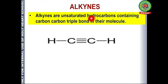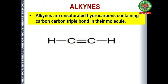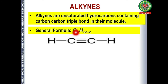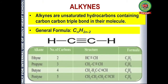First of all, we should know what alkynes are. Alkynes are unsaturated hydrocarbons containing a carbon-carbon triple bond in their molecules. We need to remember that they have a triple bond. The general formula of alkynes is CₙH₂ₙ₋₂, where n is the number of carbon atoms present in the compound.